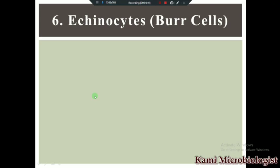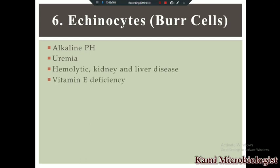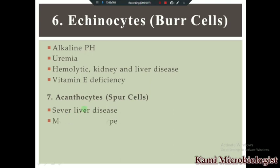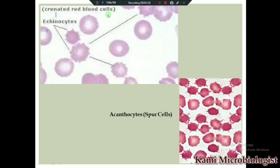Next we have echinocytes, also called burr cells. Echinocytes are present in cases of alkaline pH, uremia, hemolytic kidney and liver disease, and vitamin E deficiency. Then we have acanthocytes, called spur cells, which are present in severe liver disease, McLeod phenotype, and lipid metabolism disorder. Echinocytes have spikes or needle-like appearance on the RBC. Acanthocytes are similar but the spikes are very sharp — these are called spur cells.